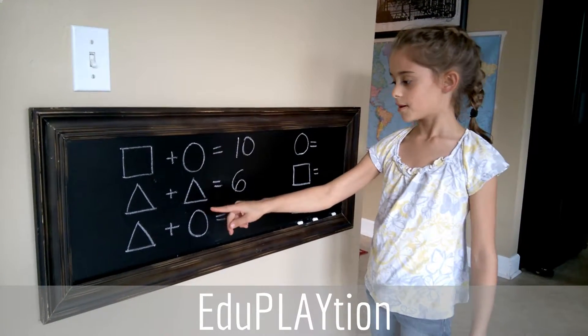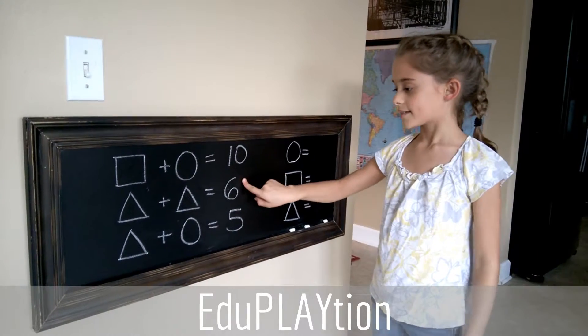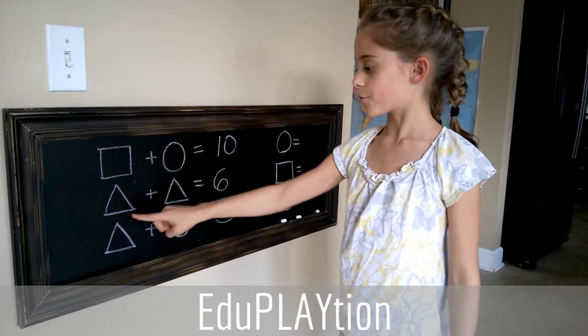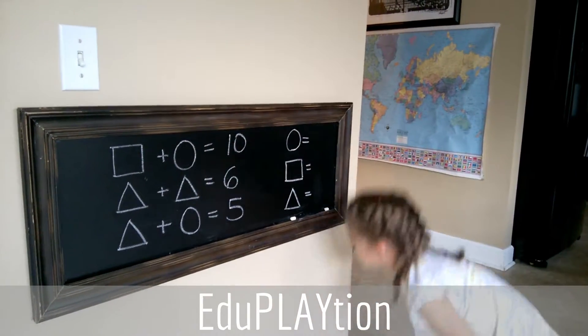They're the same shape, so they'd be the same number. So it was 6. Then obviously I'd put 3 because half of 6 is 3. So the triangle equals 3.